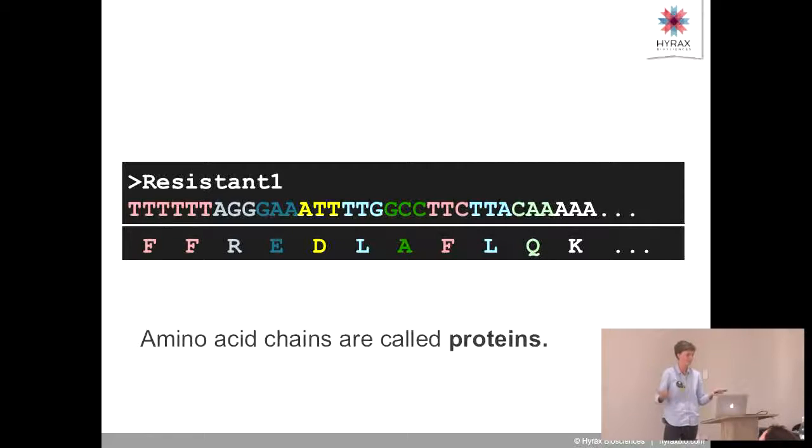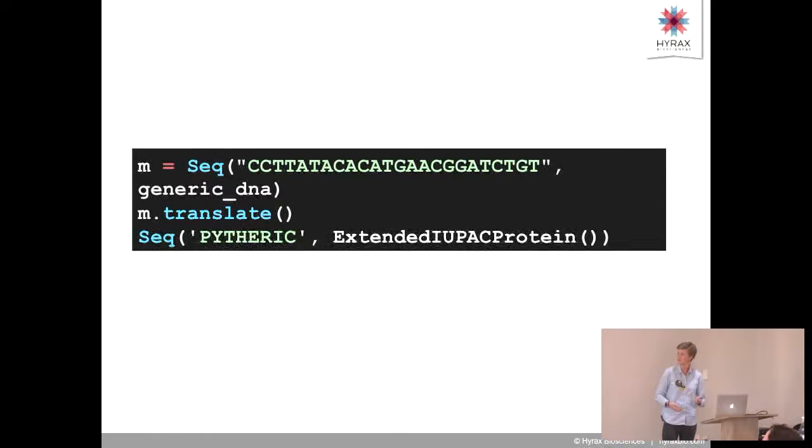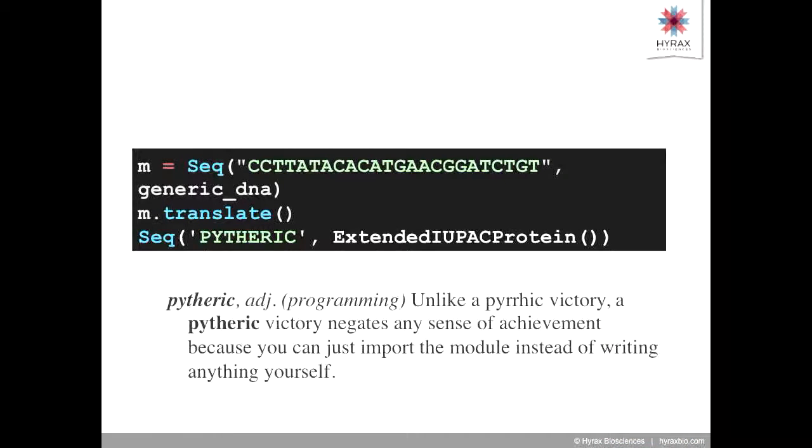If you want to do this in Python, to translate a nucleotide string into its amino acid equivalent, it's pretty simple. You read in a DNA sequence and just go translate, please. At this point, I spent a really long time trying to figure out how to translate this into something funny, but there is no O amino acid, so I can't do Python. The closest I got was Pytheric. A Pyrrhic victory is a victory that by the time you get to the end is utterly pointless. So a Pytheric victory might be when you're really excited about an algorithmic problem, then you realize you can just import a package instead.